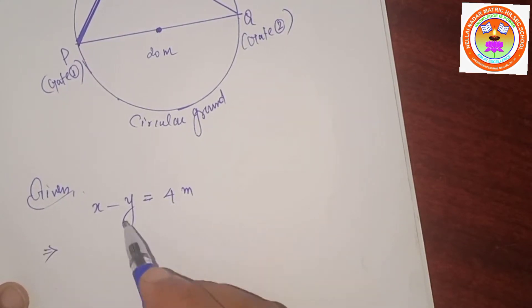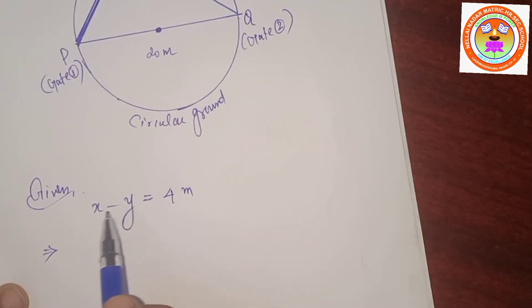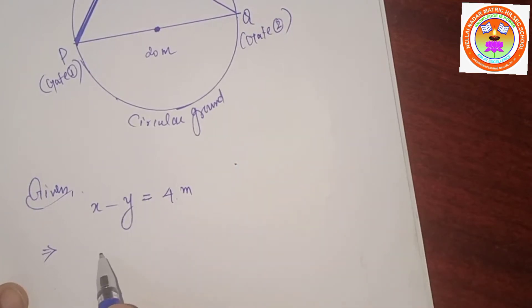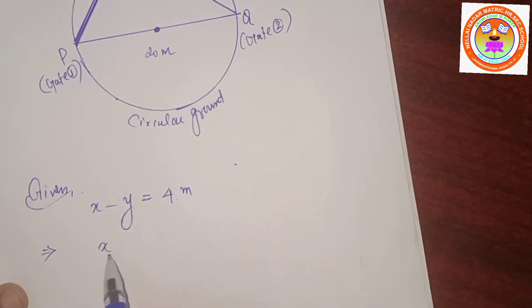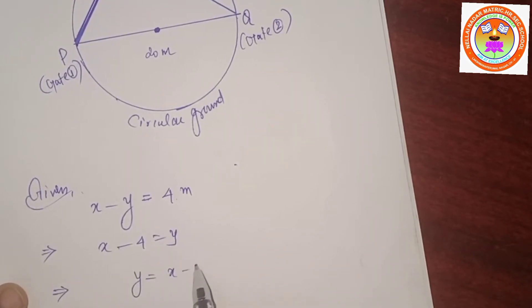Given: x minus y equals 4 meters. Which implies x minus y = 4. Rearranging: y equals x minus 4.